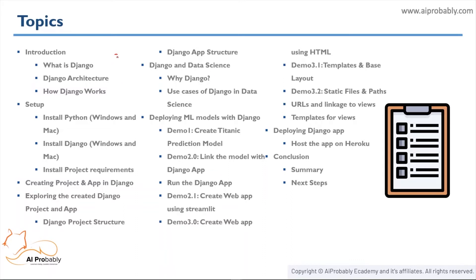We'll start with the introduction to Django — what Django is, what its architecture is, and how it works. Then we'll be setting up our environment with the required packages. After that, we'll dive into how to create a project and an app in Django, explore the project and app structure, and answer why Django is necessary and what its use cases are in data science.